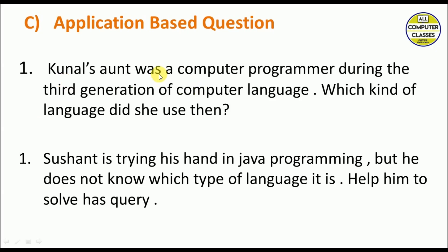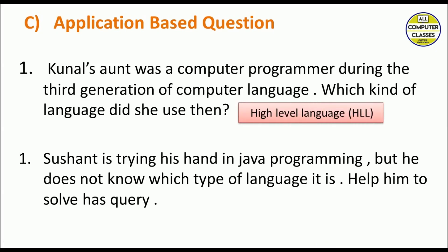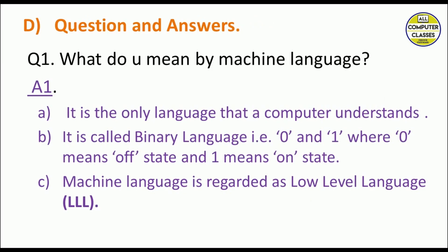Next are application-based questions. Kunal's aunt was a computer programmer during the third generation of computer languages — she used high-level language. Shant is trying his hand at Java programming and doesn't know which type of language it is. Java, along with C and C++, is a high-level language.